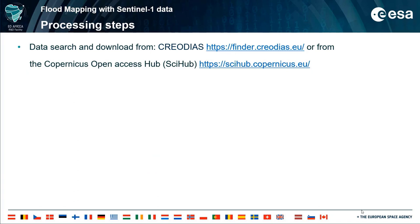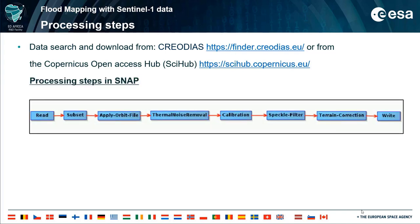In this webinar, you will also learn the basics of image processing for flood mapping. First, we will need to search and download the necessary data either from the CreoDS platform or from the Copernicus Open Access Hub. Here are the processing steps that will be applied — we will create a graph, a processing chain, where we will insert all the processors we want to use in order to make the raw images usable for flood mapping. At the read operator, we will insert the original data. In our case, we will work on four different images — one before the event and three during and after it.